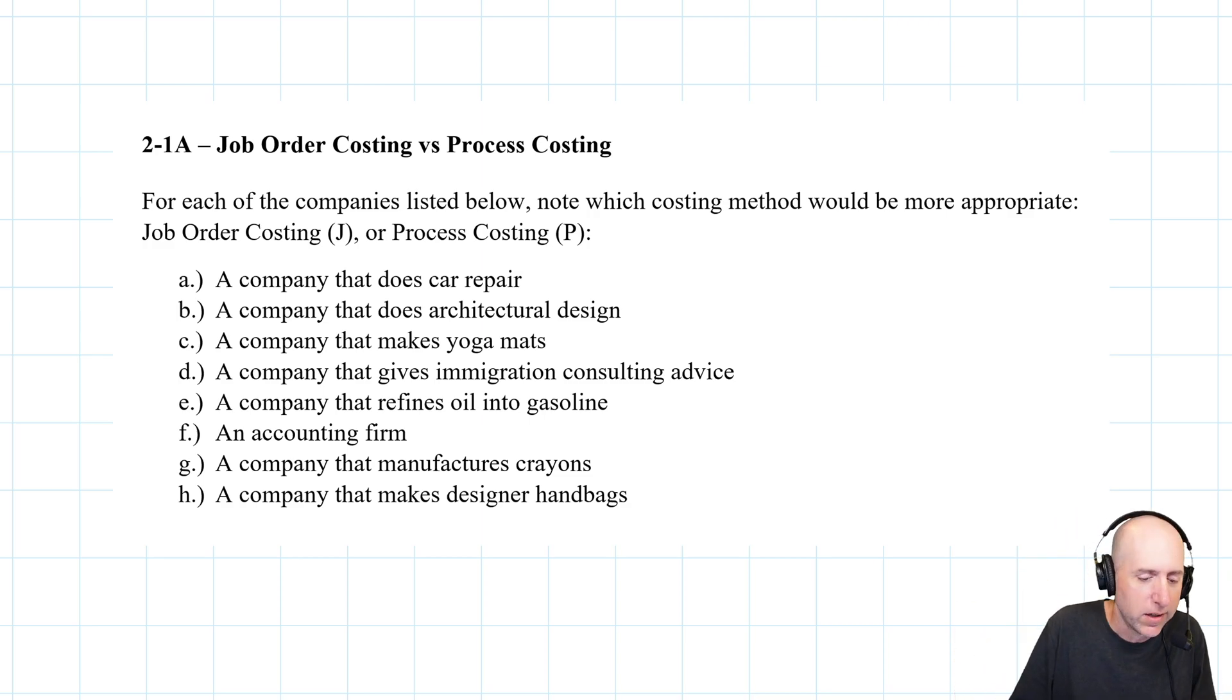This question says, should the company use job order costing—do they make a custom product—or should they use process costing—is their product more of a one size fits all? If you can get away with it, you would rather use process costing than job order costing. We're going to denote what's more appropriate: job order with a J and process with a P.